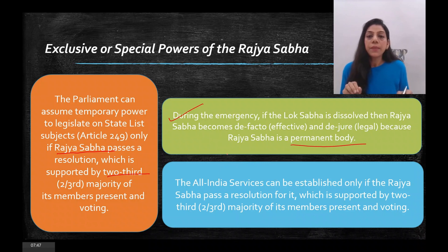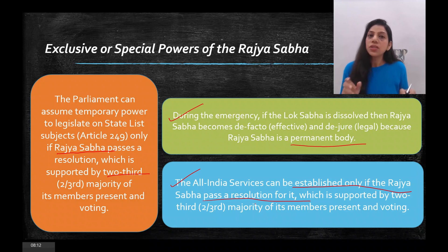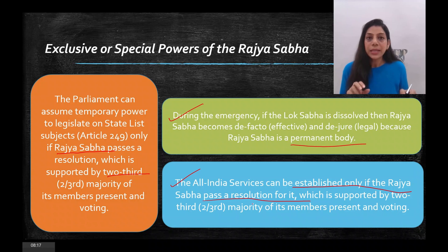Finally, All India Services such as IAS, IPS, Indian Foreign Service, and Indian Forest Service can only be established by Rajya Sabha if it passes a resolution supported by two-thirds of its members present and voting. These are the exclusive powers of Rajya Sabha, and that brings us to the end of the chapter. Thank you everyone.